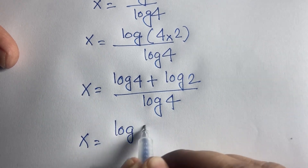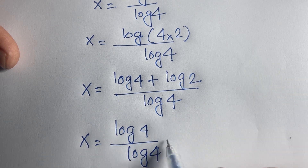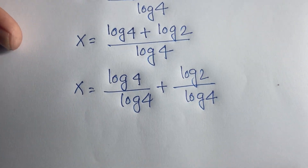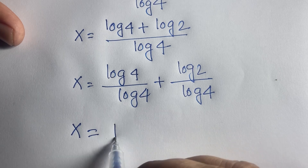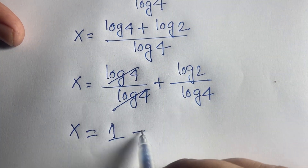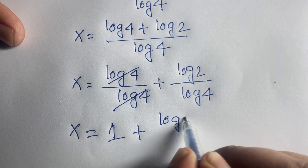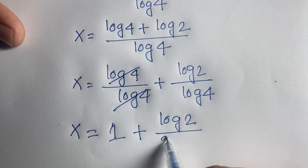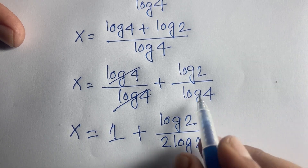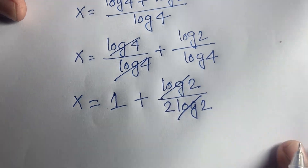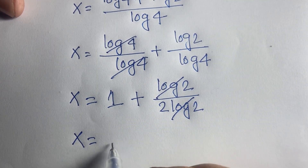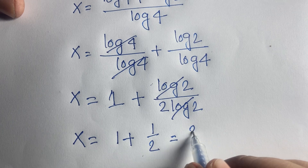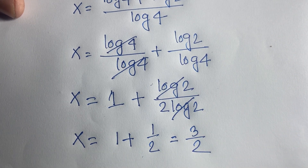So x equals log 4 divided by log 4, plus log 2 divided by log 4. The first term simplifies to 1. For the second term, log 4 equals log 2 squared equals 2 log 2, so log 2 over log 4 equals log 2 over 2 log 2, which simplifies to 1/2. Therefore x equals 1 plus 1/2, which is 3/2.